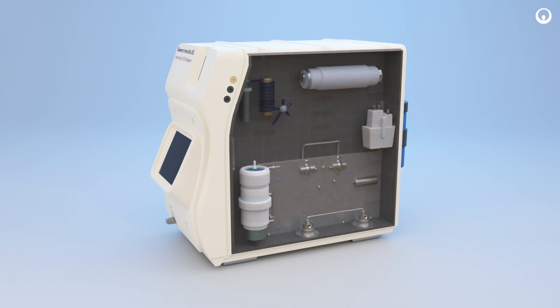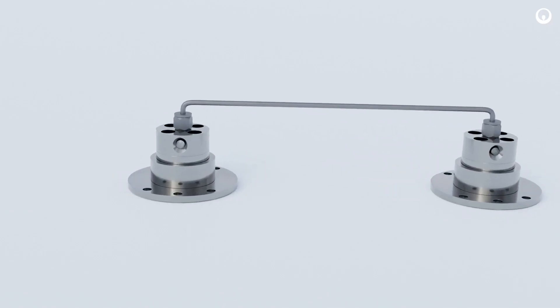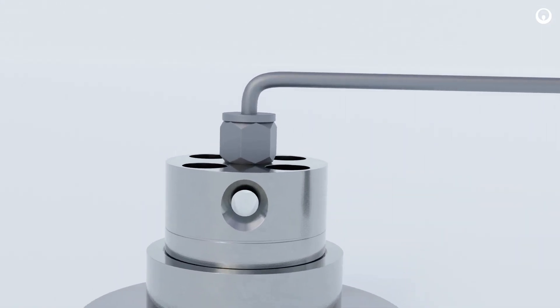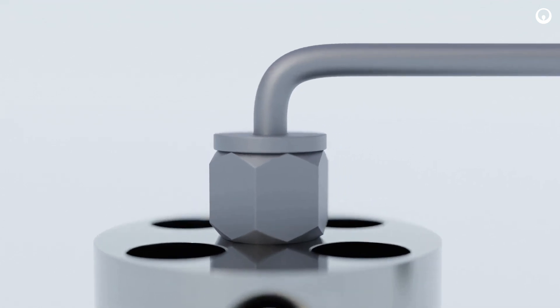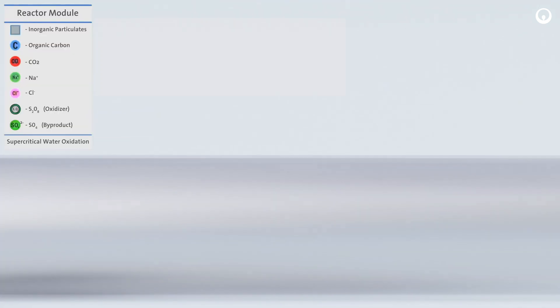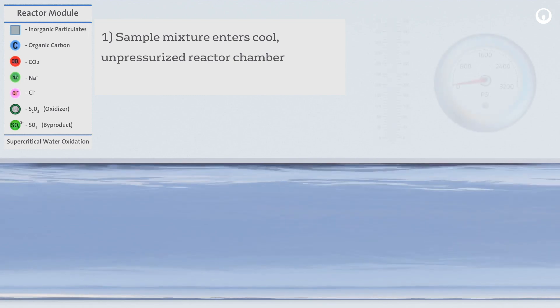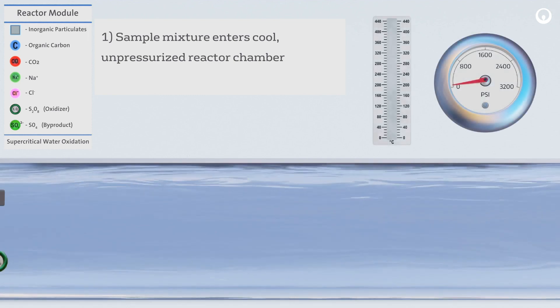Supercritical water oxidation technique occurs in the reactor module of the analyzer. Let's take a deeper look at what is happening to the sample in the reactor chamber. First, the sample enters the cool, unpressurized chamber.